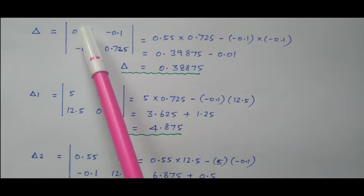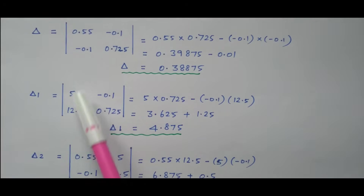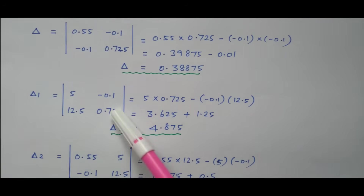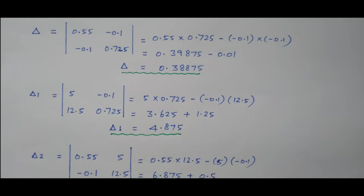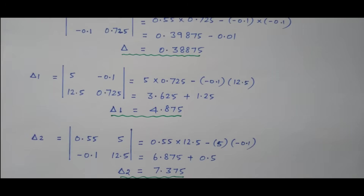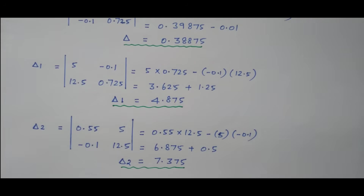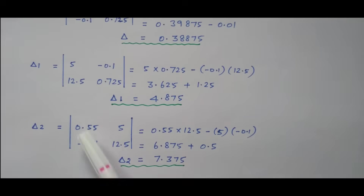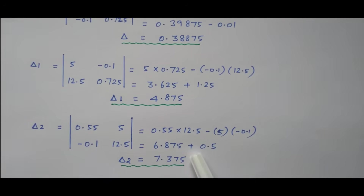For delta 1, we replace the first column of the resistance matrix with the current matrix (5 and 12.5) and find the determinant: 5 times 0.725 minus (minus 0.1 times 12.5). The two negatives make it positive, giving delta 1 equals 4.875. For delta 2, we replace the second column with the current matrix: 0.55 times 12.5 minus 5 times (minus 0.1), giving delta 2 equals 7.375.